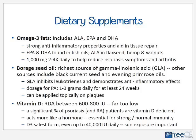Borage seed oil is another good supplement — it is the richest source of gamma-linolenic acid, or GLA, though other sources include black currant seed oil and evening primrose oil. These supplements can be taken orally or spread on the skin over isolated plaque areas. GLA inhibits leukotrienes and demonstrates good anti-inflammatory effects. For PA, one to three grams daily for at least 24 weeks shows good results.